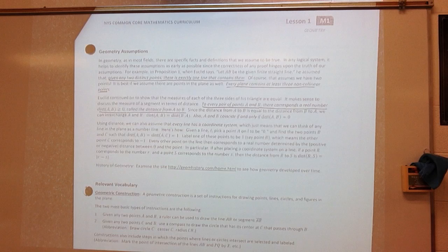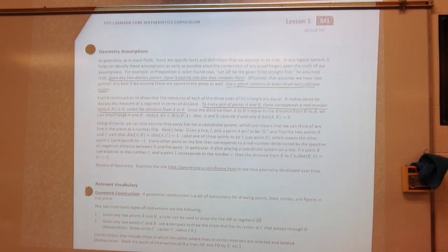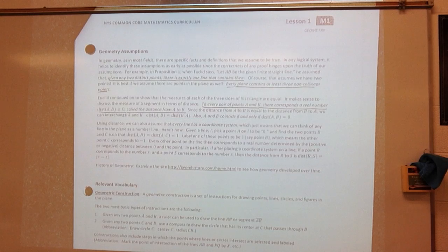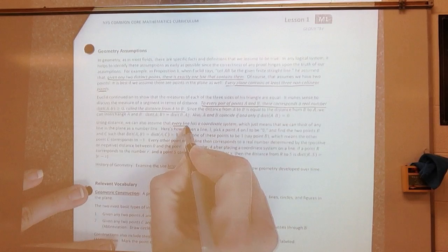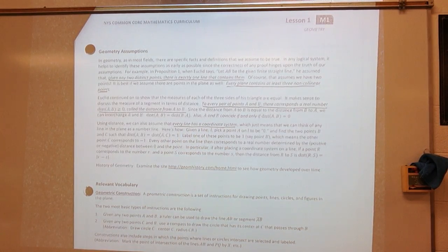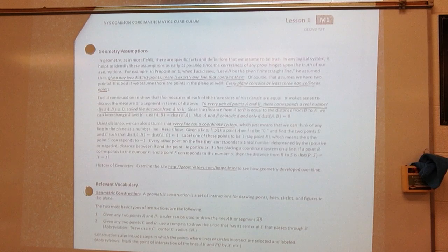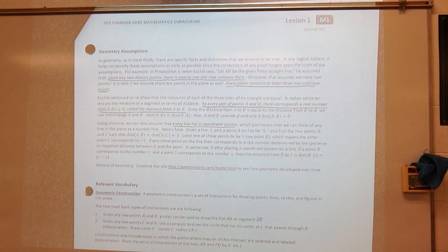Since the distance from A to B is equal to the distance from B to A, we can interchange A and B. Okay? So, AB is the same as BA. Using distance, we can also assume that every line has a coordinate system, which just means that we can think of any line in a plane as a number line. Here's how. Given a line, L, pick a point A on L to be zero. And find the two points B and C, such as the distance of AB, is equal to the distance of AC, or one. Label one of these points to be one, say point B, which means the other point C corresponds to negative one.